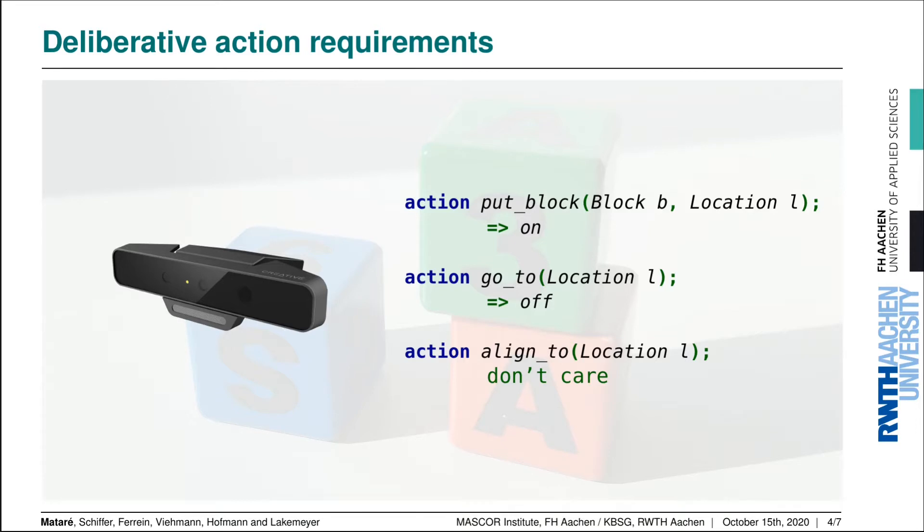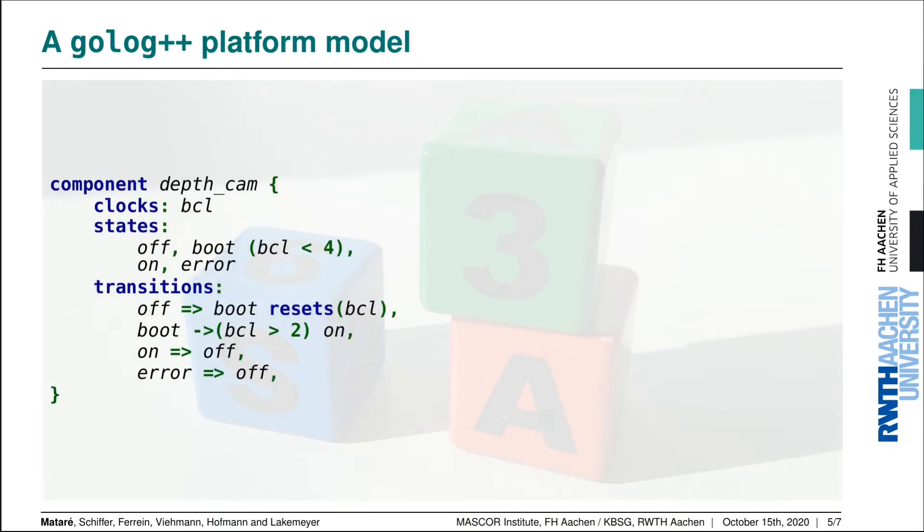So in golog++ we can model all of this as a so-called platform model. The first part of that is writing down a component model, so we have this component called depth_cam. It's described as a timed automaton, so the special thing about timed automata is that they have clocks, and both the states and the transitions can be guarded on those clocks. We have the states off, boot, on, and error. The model says that we can only stay in the boot state as long as the bcl clock counts less than four seconds.